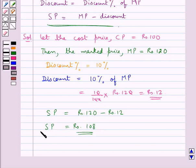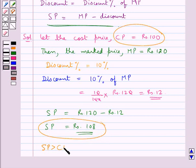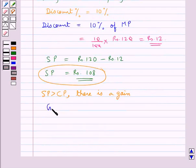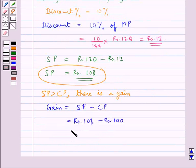Now, the selling price is Rs.108 and the cost price is Rs.100, so selling price SP is more than the cost price CP. Therefore there is a gain, and this gain is equal to SP minus CP, which is Rs.108 minus Rs.100, equal to Rs.8.